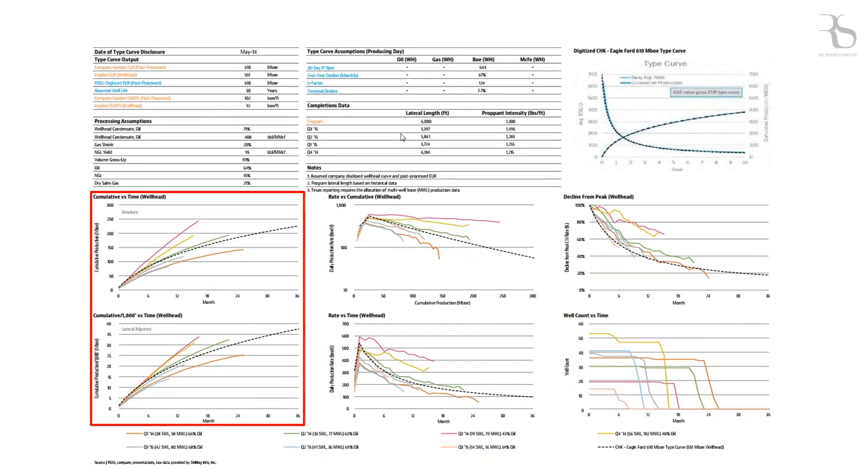I like to highlight the cumulative production versus time graph shown over here on the left. As these ones here, they remove a lot of the noise that you see in the daily production charts in the middle. And it also helps to accurately highlight early time cash flows.